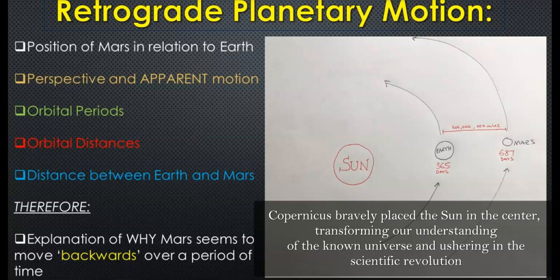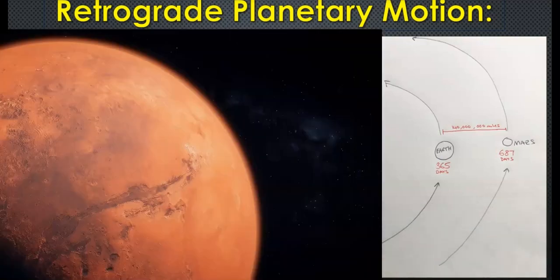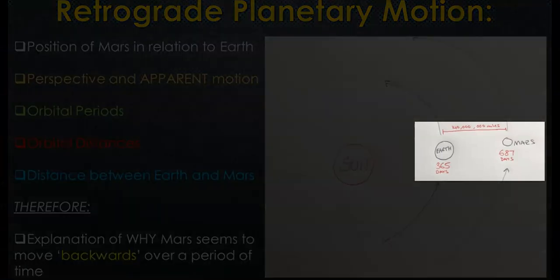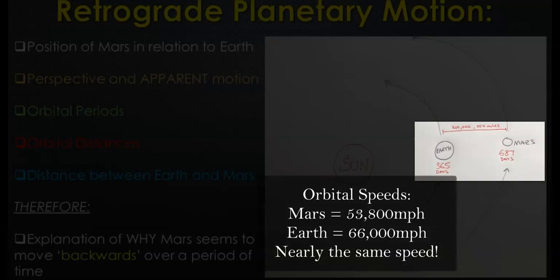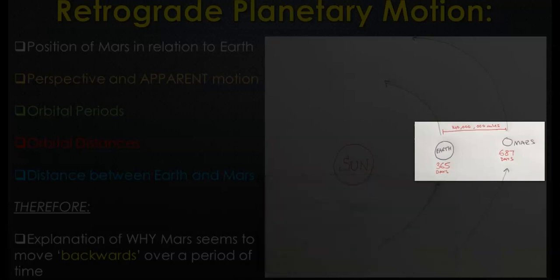Mars is the next planet further away from the sun. With the sun in the middle and an accurate understanding of planetary motion, Earth — the third planet from the sun and the last terrestrial planet — orbits in 365 days, with 0.25 extra giving us the leap year. Mars is further out with a longer distance to orbit, so it takes longer — about 687 Earth days. One year on Mars is nearly double that of Earth.